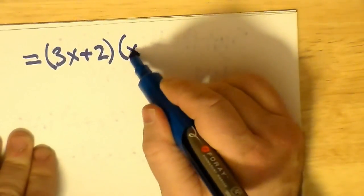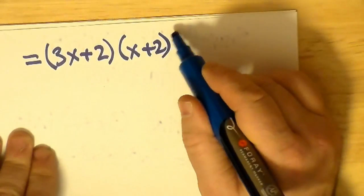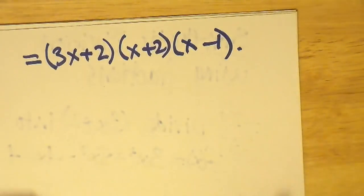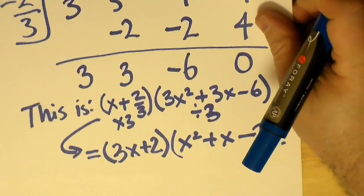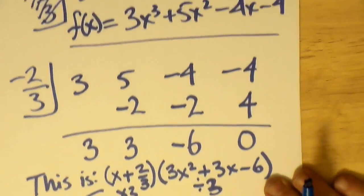So we get 3x plus 2 all multiplied by x² plus x minus 2. Now 3x plus 2 times x plus 2 times x minus 1 will give us the original polynomial 3x³ plus 5x² minus 4x minus 4, which is what we started with.